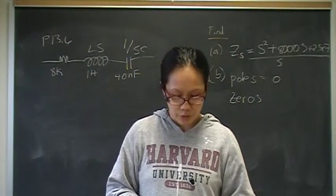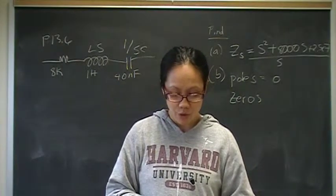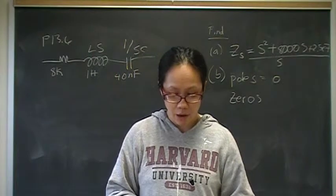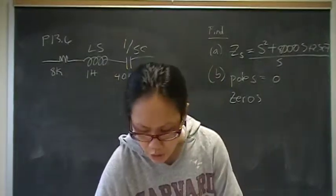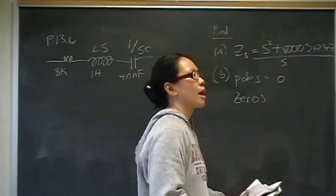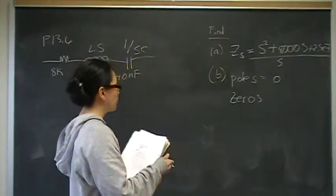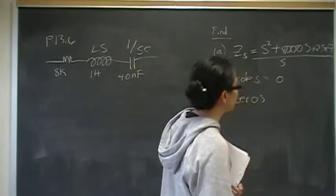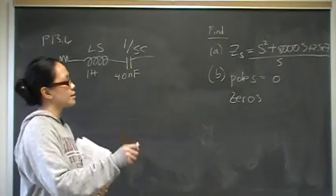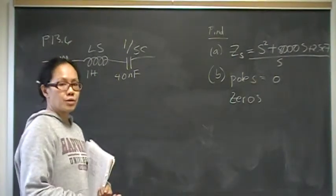When you use the factor and it just spits it back up, that means you have non-real roots, and you have to go to Catalog, if you have a TI-89, and ask it to do a C-solve. Then you would enter S squared plus 8,000 S plus 2.5E7 equals zero, solve for, and then with a comma X, and then it will give you two answers.